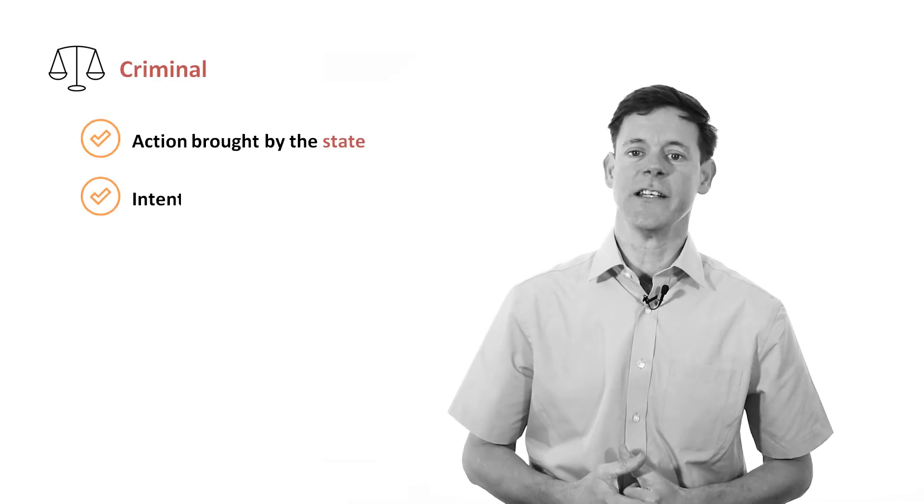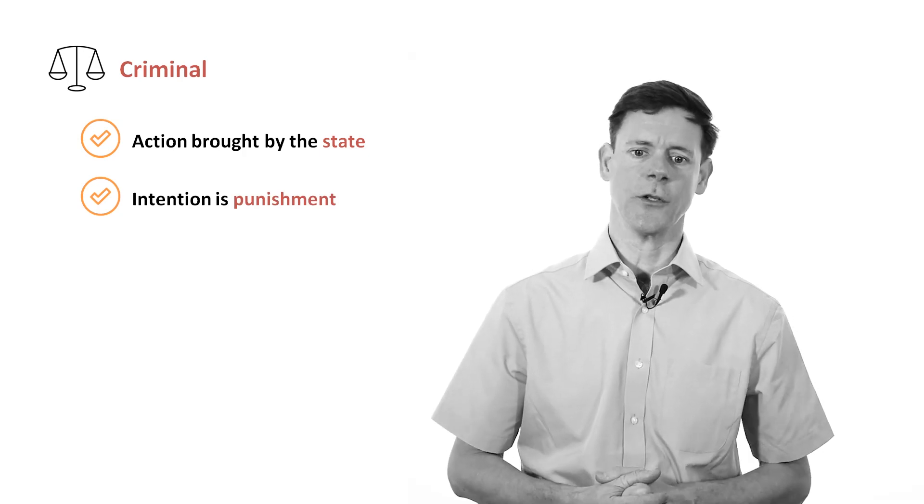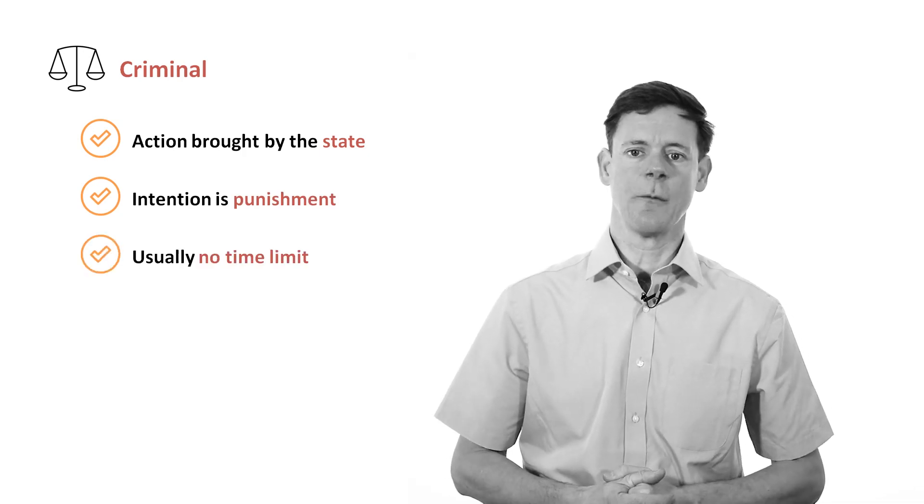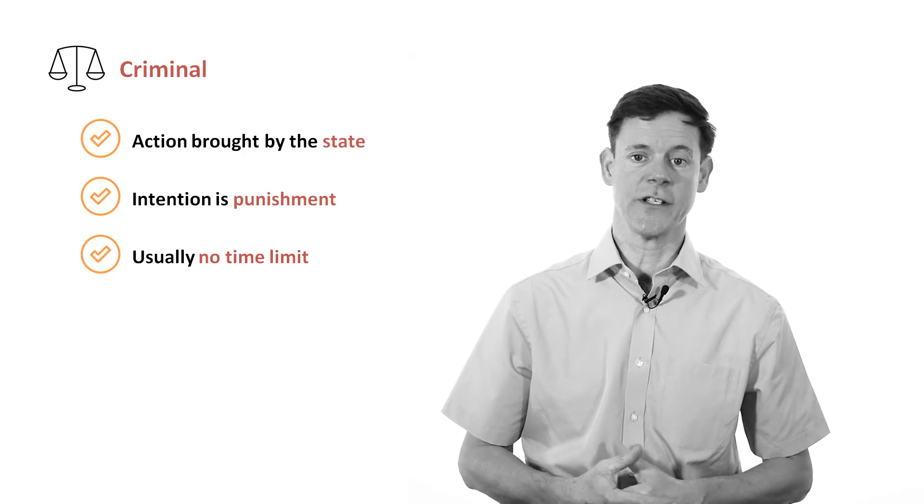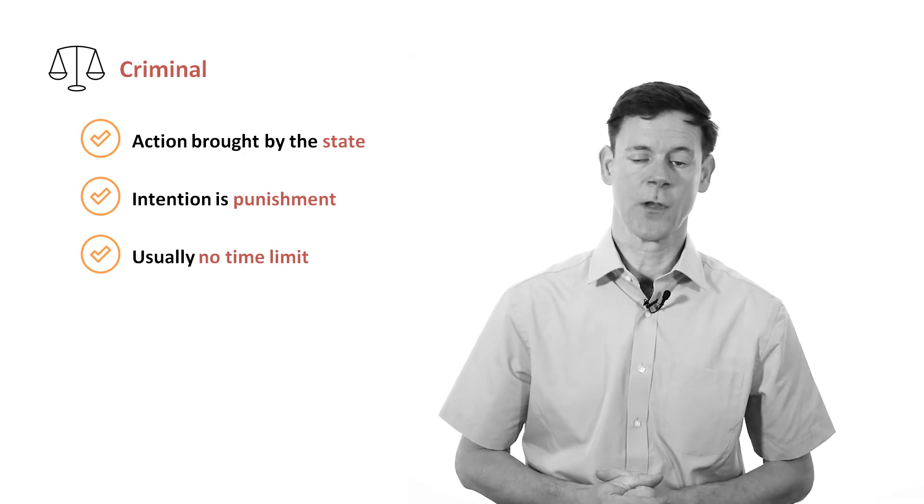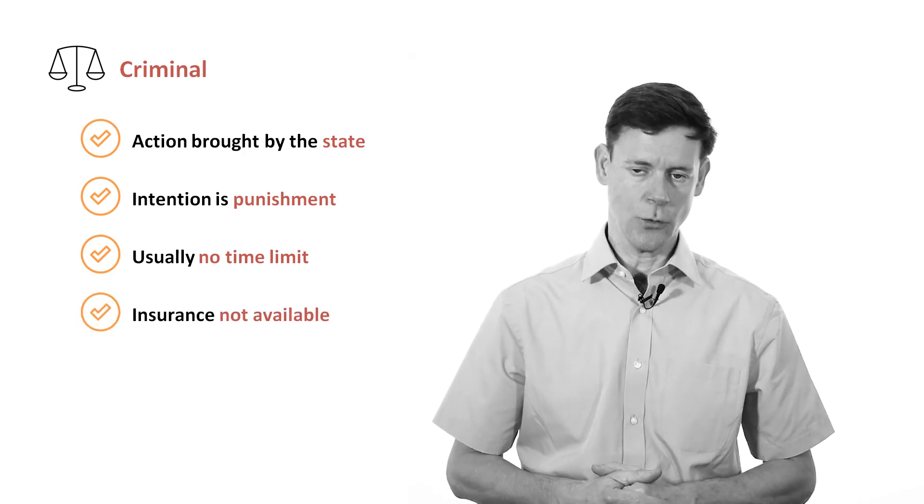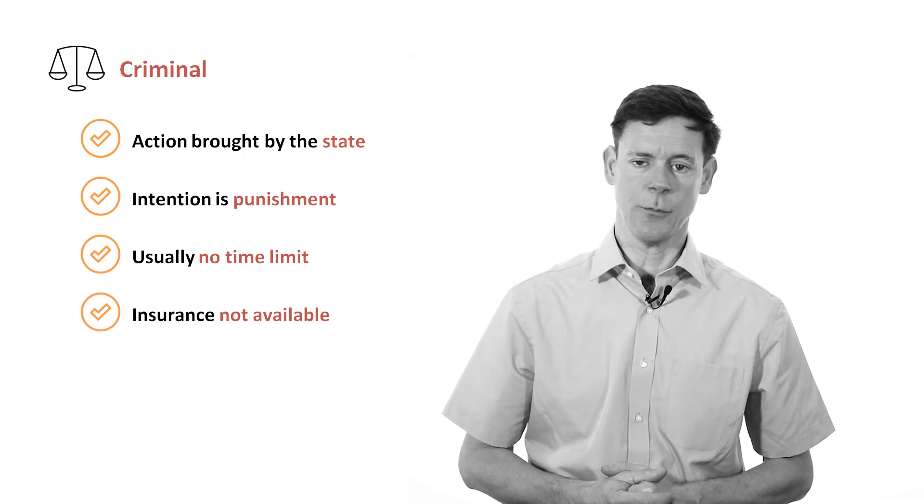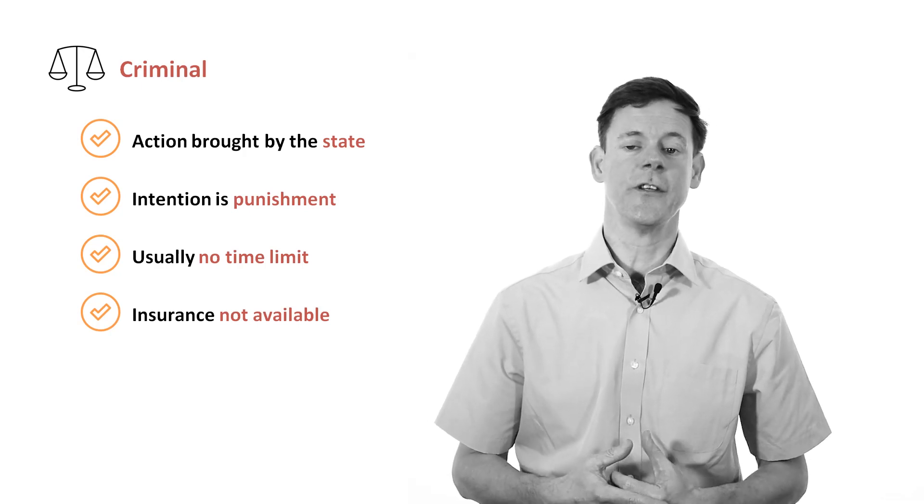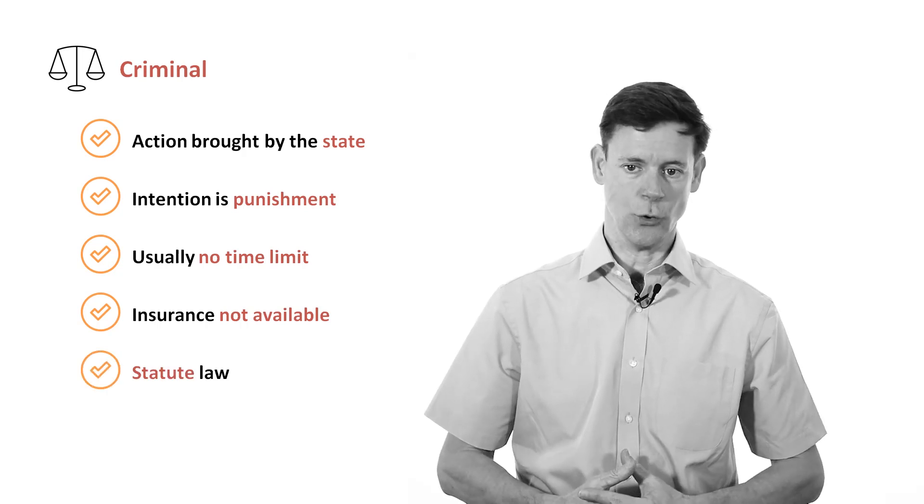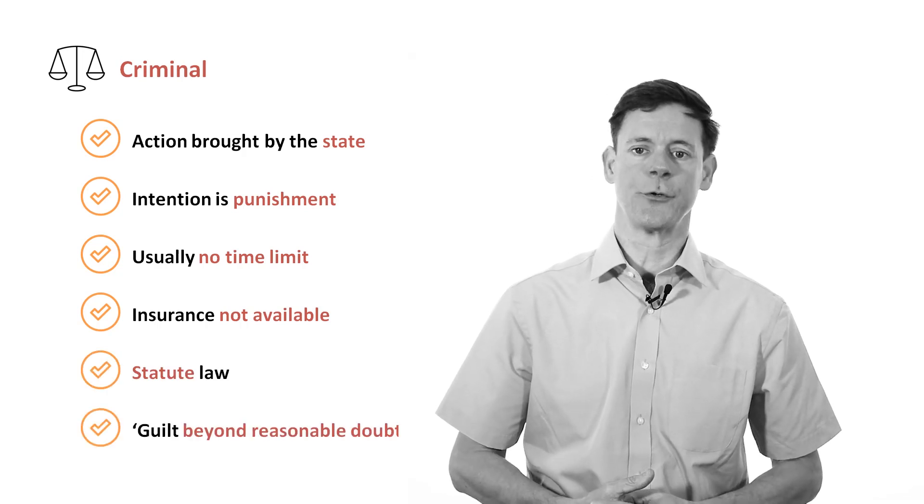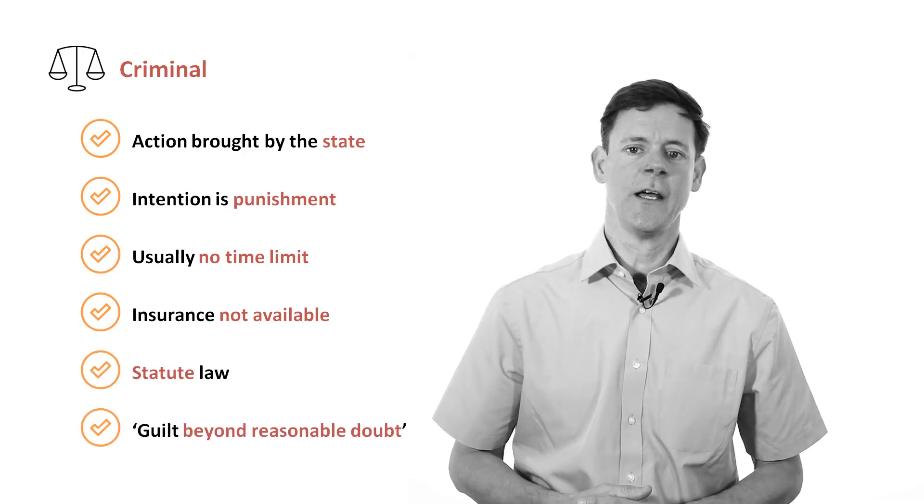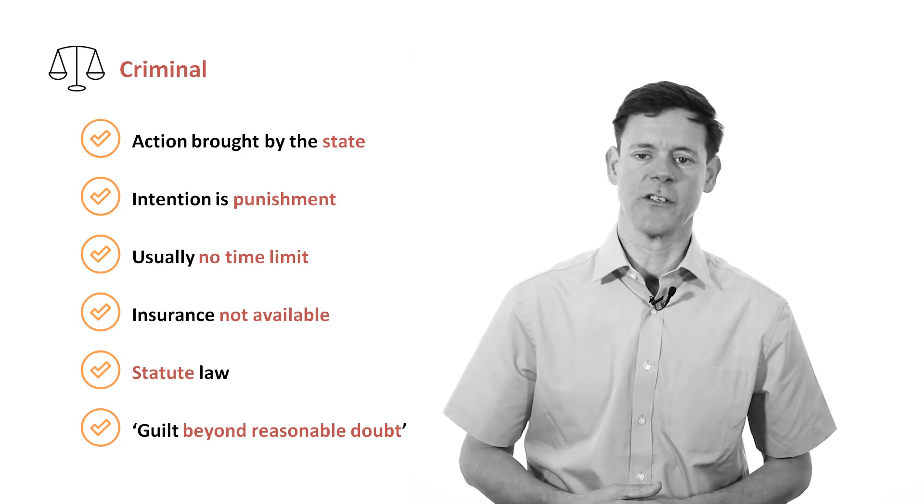Now in outline, the criminal legal system has a number of characteristics. The criminal action is brought by the state. The intention is to punish people who have broken the law. There is not normally a time limit set on when the authorities have to start their criminal action. Insurance is not available to pay the fine issued by the criminal courts. The source of law used in the criminal system is statute law. And the burden of proof rests with the prosecution to prove their case beyond reasonable doubt.